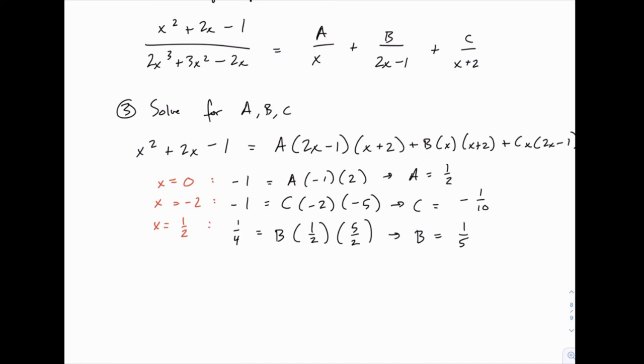So we now know A, B, and C, which means that the integral of x² + 2x - 1 over 2x³ + 3x² - 2x is equal to the integral of A over x, 1/2 over x, plus B over 2x - 1, plus C over x + 2.